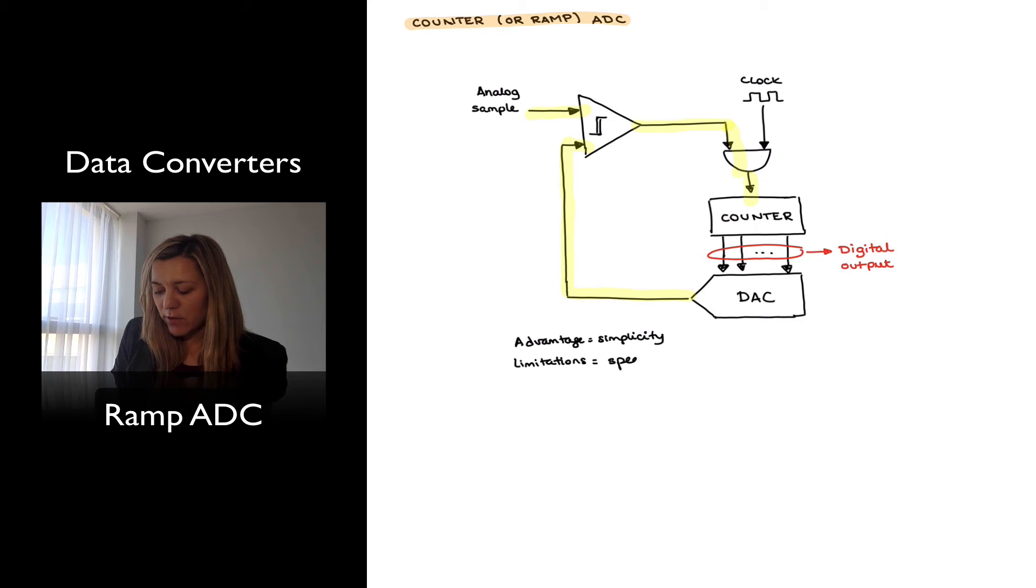But one of the main limitations is the speed. And the reason for that is we're starting the count from zero every time, and we have to allow for, in the case where the analog sample has the maximum input voltage.